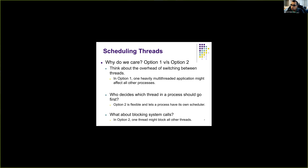Also, the way scheduling happens between different threads of a process may not be something the operating system is completely aware of. A multi-threaded process may want custom scheduling for its own threads, which is not possible if we rely solely on the kernel. Option two — using a user-level thread library — is more flexible because it allows the process to make its own scheduling decisions between its threads.